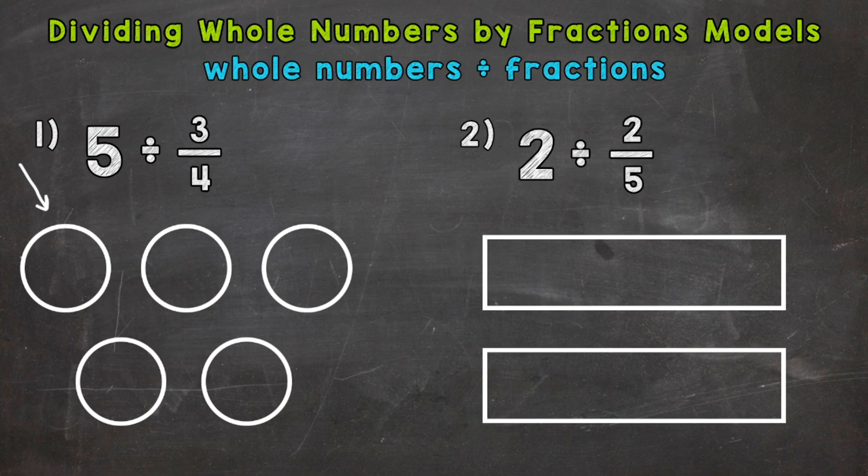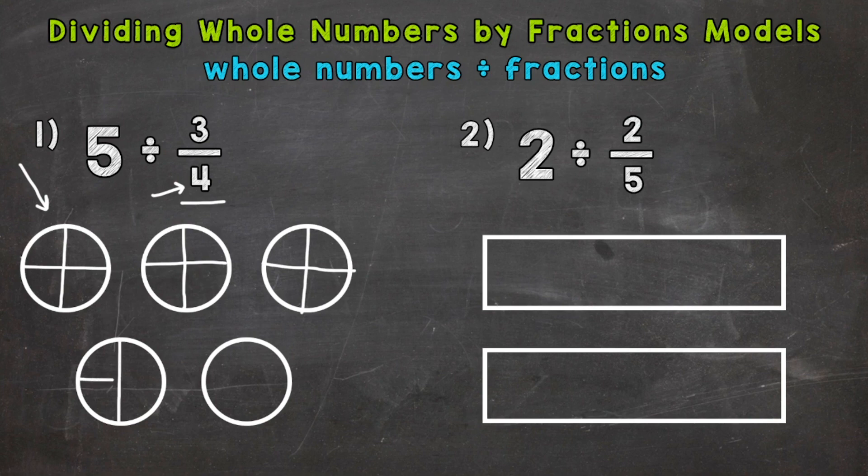So once we have our 5 wholes, we need to split them into fourths. This denominator here tells us that. So as evenly and as best we can, we split each of them into fourths. It does not have to be perfect. Mine definitely isn't. But we will still get the correct answer as long as they are divided into fourths.